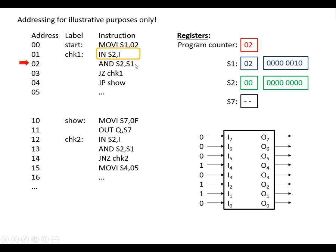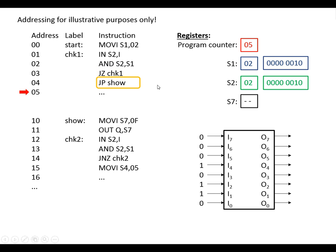We carry out the next instruction, copy the input in, and do the AND function again. This time the result is not zero, so when we get to the JumpZ line — jump if zero — well, it isn't zero, so we just carry on as usual, because the program counter always shows us the next instruction address.